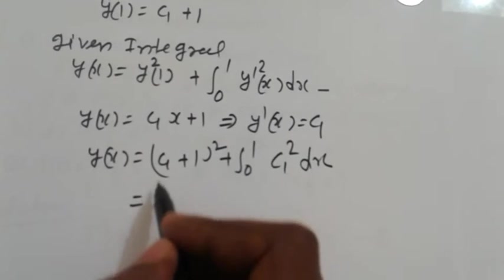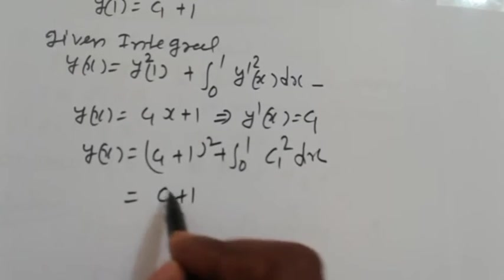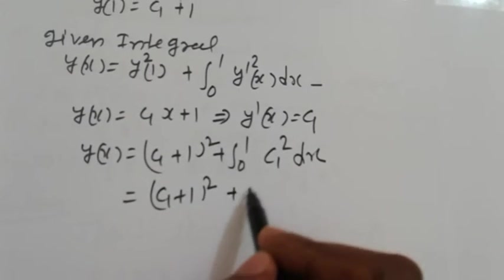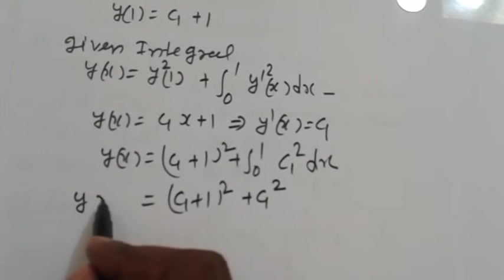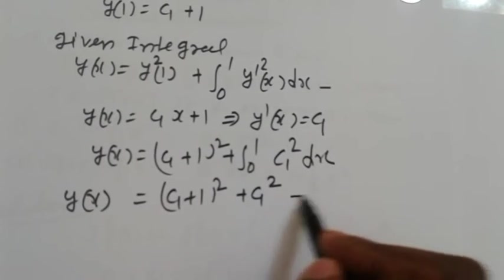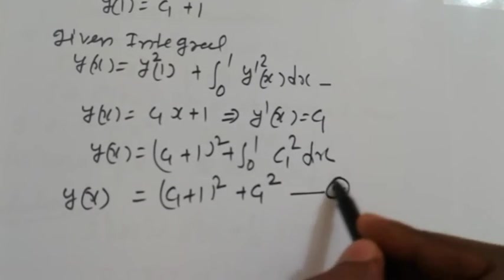So simplify, we get here (C₁ + 1)² + C₁², which is y(x), so equation number 4.